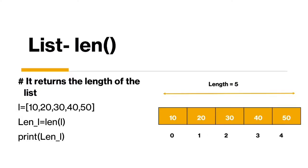Talking about the length function, it is very obvious to understand it with its name itself — it returns the length of your list. So if I have a list with five elements and pass it as an argument to the length function, it will return five. Let us go back to our Python screen and see how this function works.